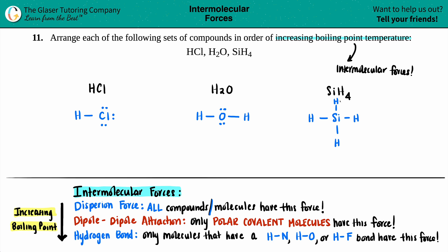Now from this, we can figure out what types of intermolecular forces they have. Dispersion force is always a given because all compounds or molecules, no matter what's going on, will always have this force. So HCl, H2O, and SiH4 will all have dispersion. HCl has dispersion, H2O has dispersion forces, and SiH4 also has dispersion forces.